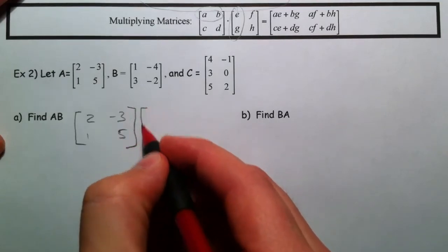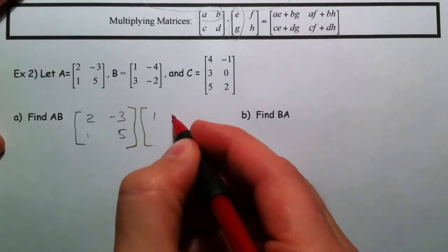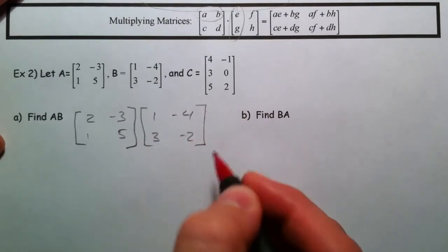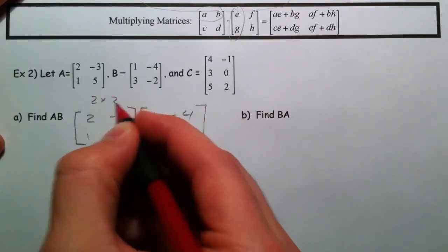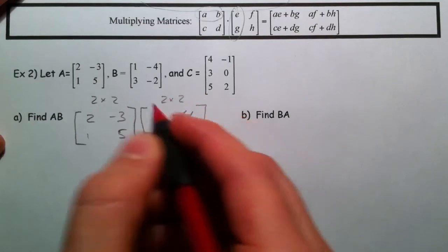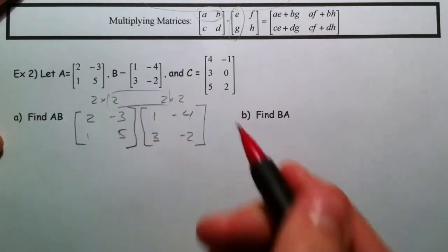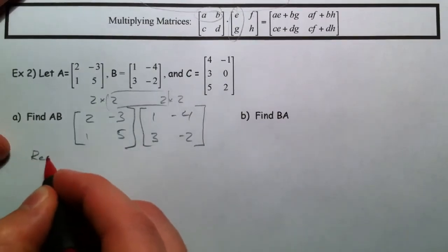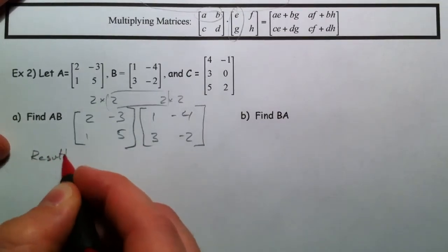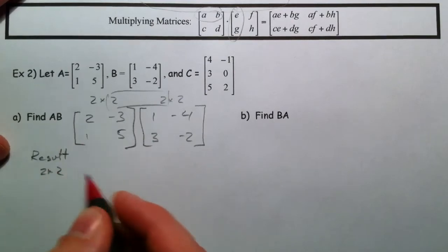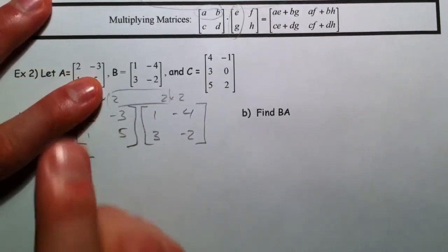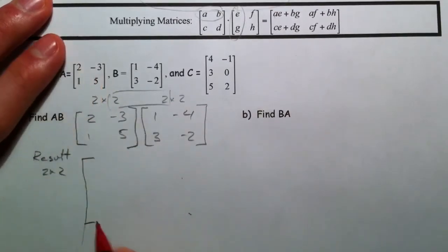We're going to multiply A times B. Again, double check that you can. This is a 2 by 2, this is a 2 by 2. The middle ones match. And so getting out, we're going to get a result of a 2 by 2. So I'm going to make a big one just so we can have room to write everything we need to.